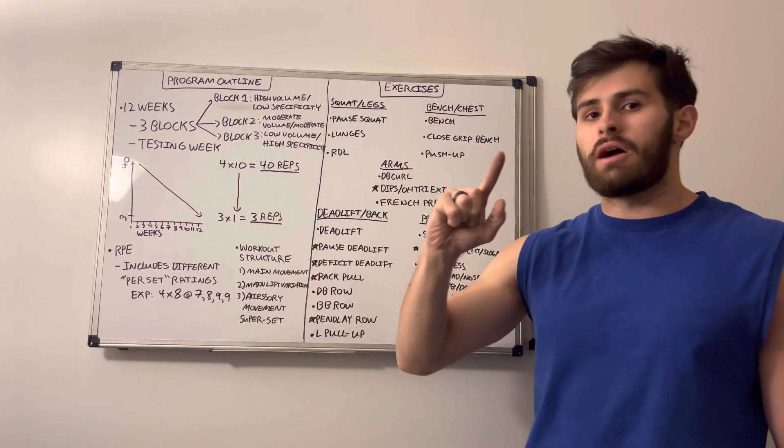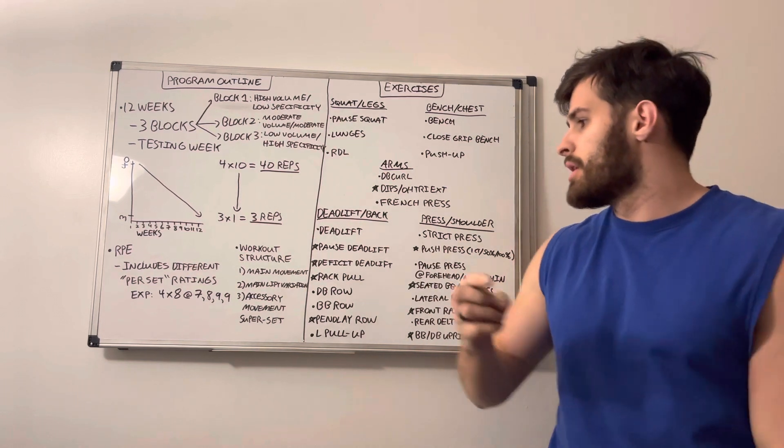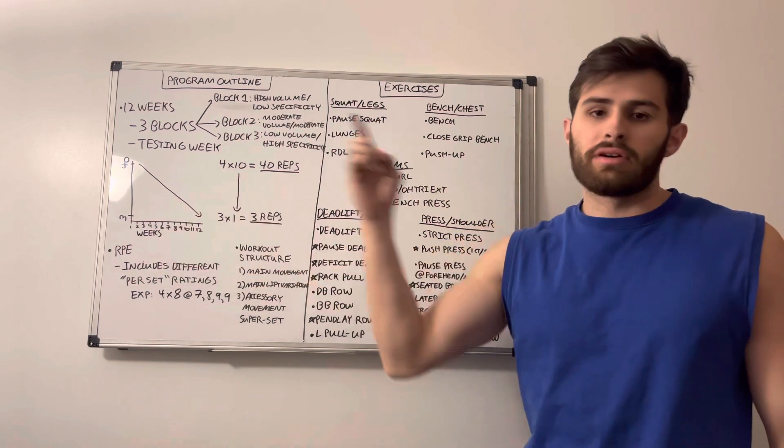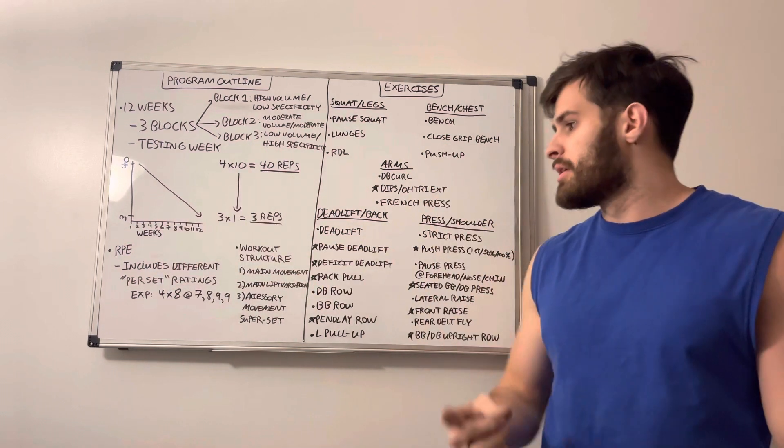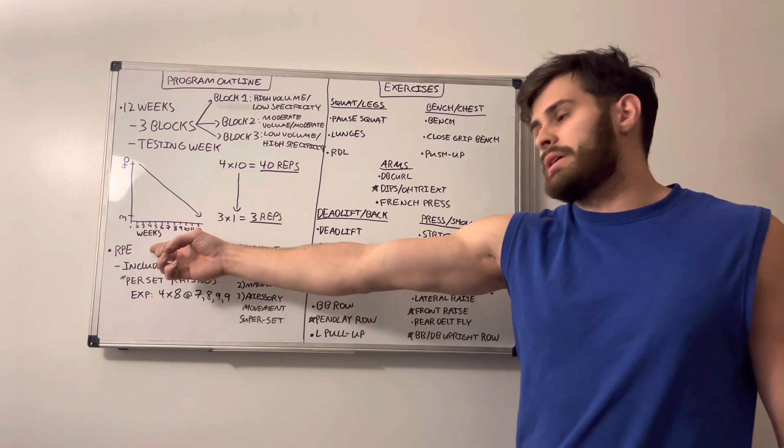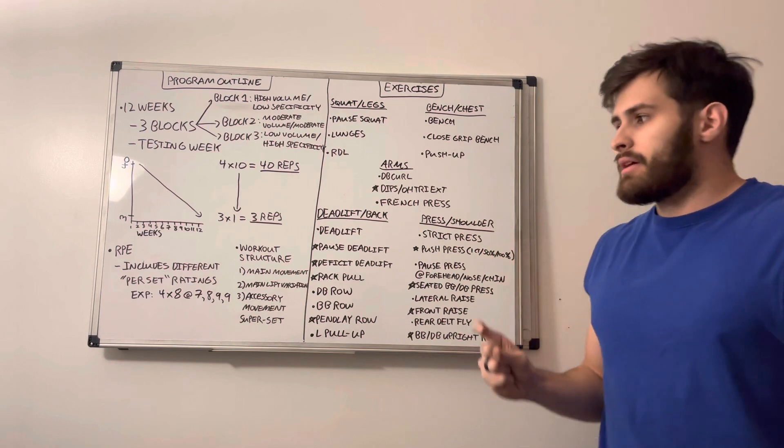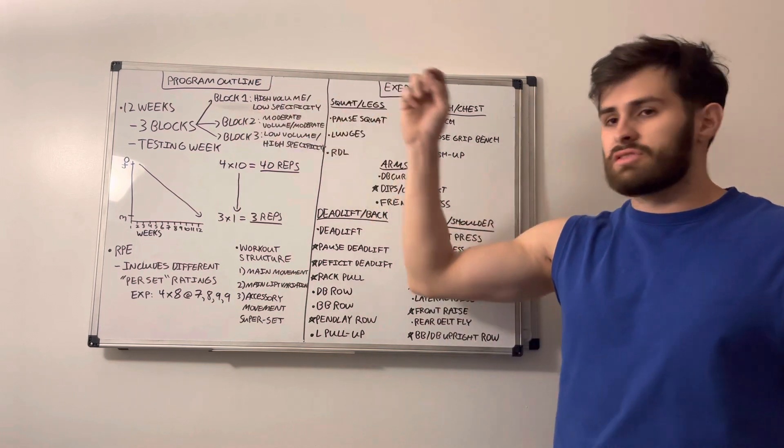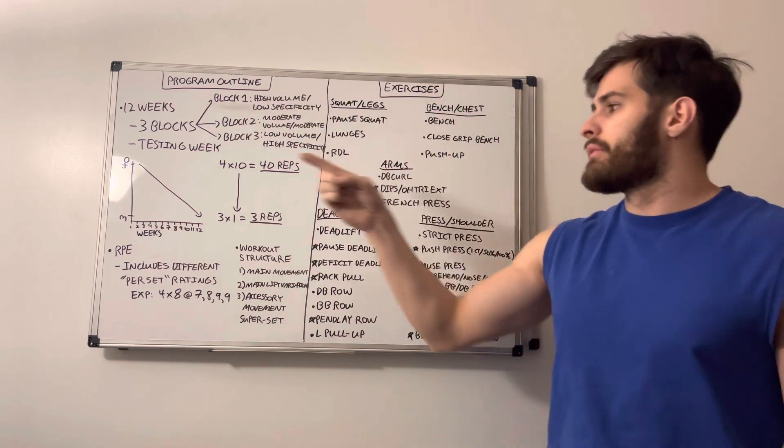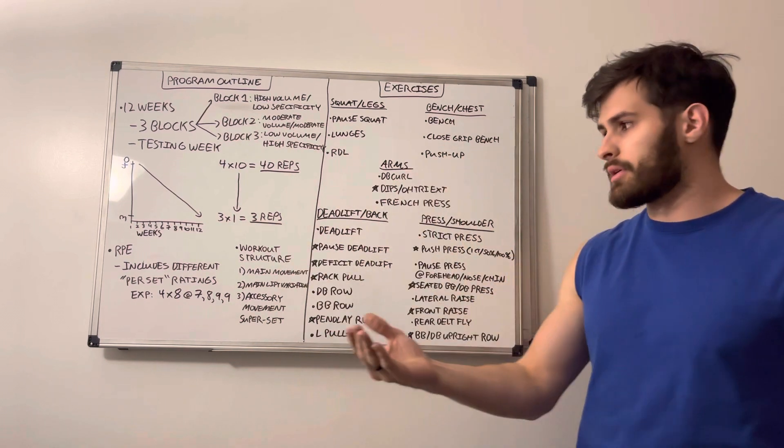As far as how we're going to rate each of these, if you've worked through the previous program that we just ran through, RPE is going to be used. And we have other videos on this, you can go and check those out on the channel. But for those who are familiar, we're going to be using RPE like we used in the last program, except we're going to use it slightly differently. For the first block, you'll see that we'll have, for example, four sets of 10 on RPE 7, four sets of 10 on RPE 8, something that's pretty familiar.